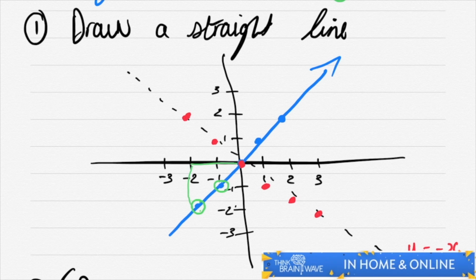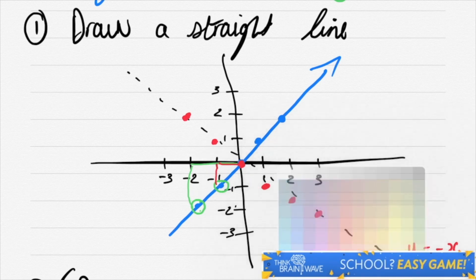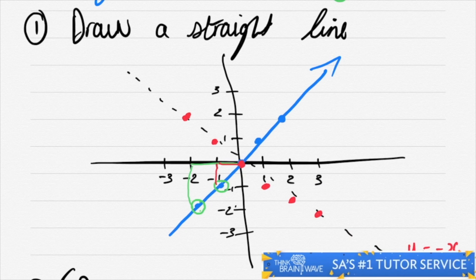Then you go across. Over here you go across minus 1 and down minus 1. Then you go up 1 and across 1.